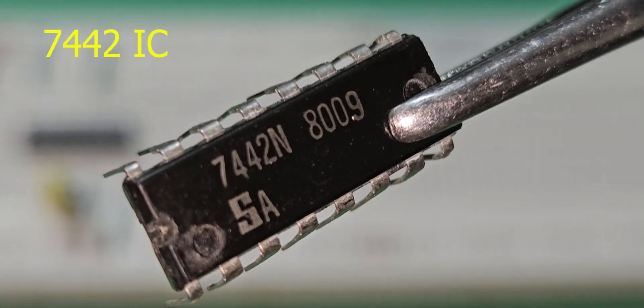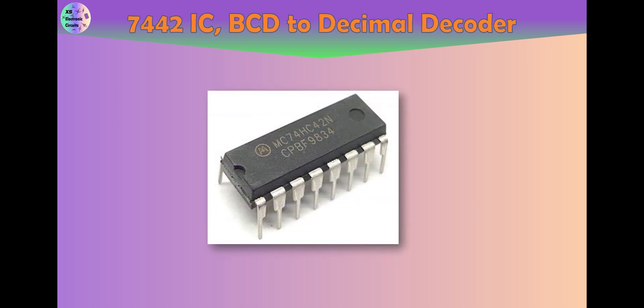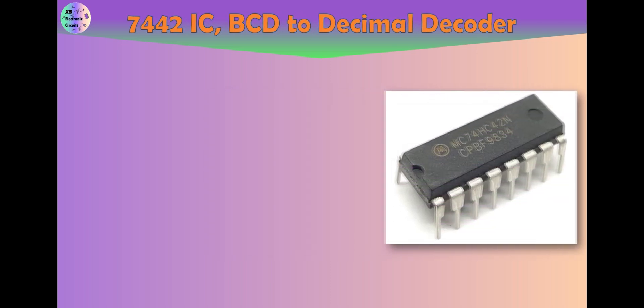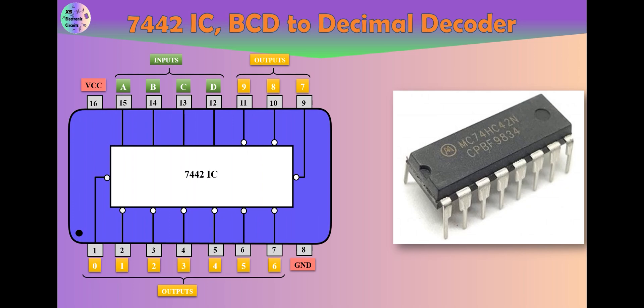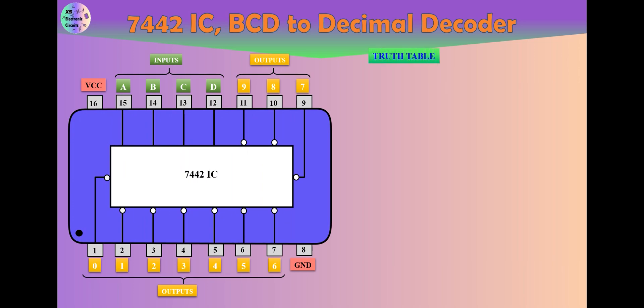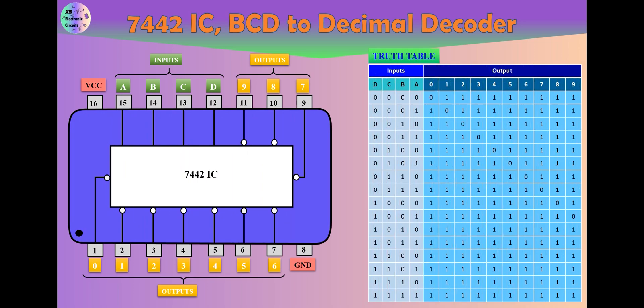IC 7442 is a type of digital IC that includes a BCD to decimal decoder. This IC includes 4 inputs and 10 outputs. The outputs of this IC are active 0.